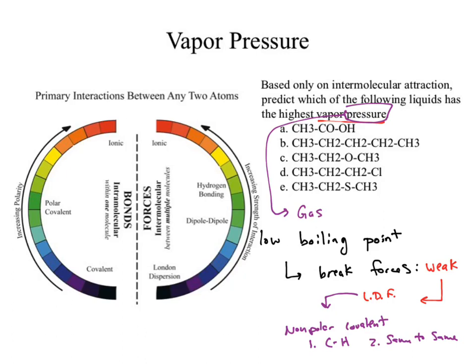What do we see in A? Carbon to hydrogen — that satisfies our rule. But also carbon to oxygen. That would be polar covalent, which does not satisfy our rule. So that answer right out of the gate would probably be a bad answer — it doesn't match nonpolar covalent. So A is probably wrong.